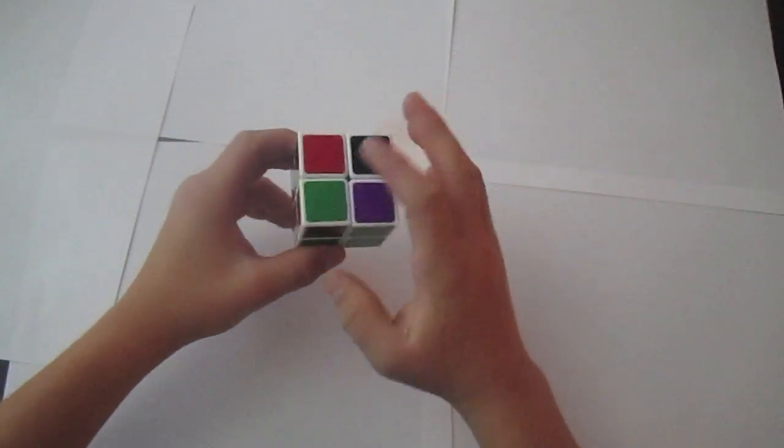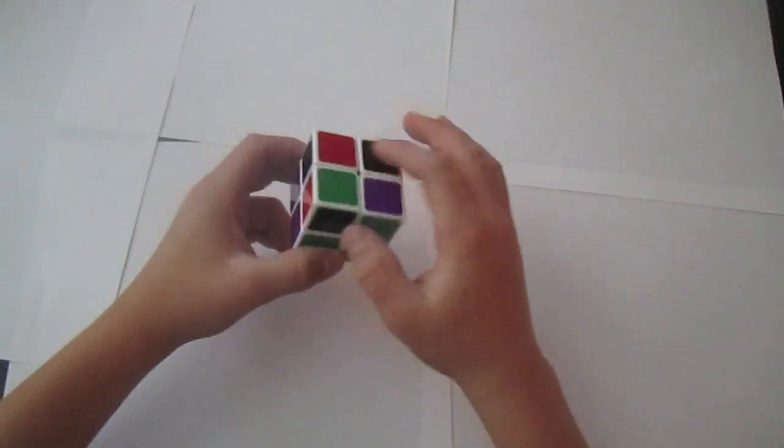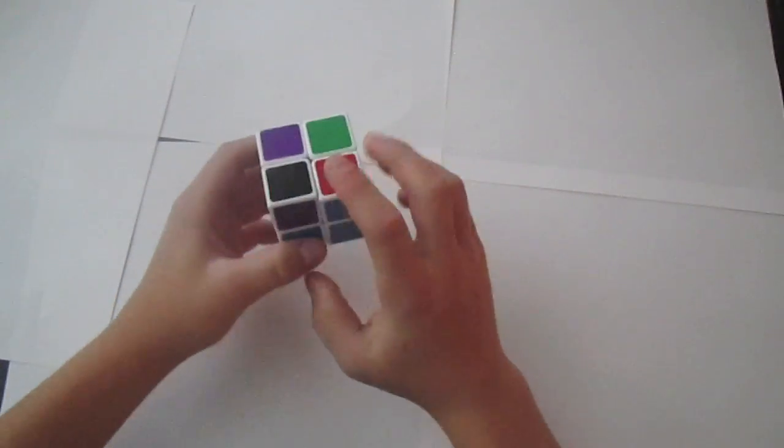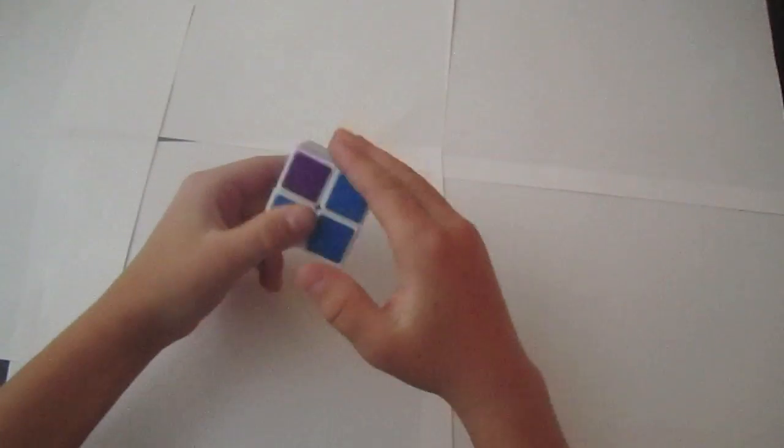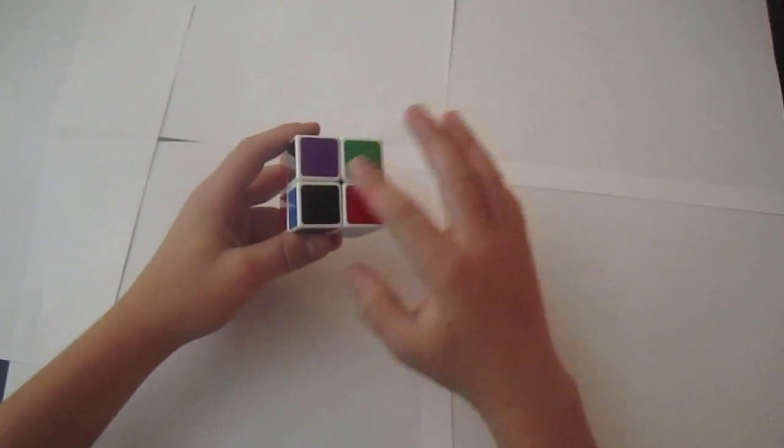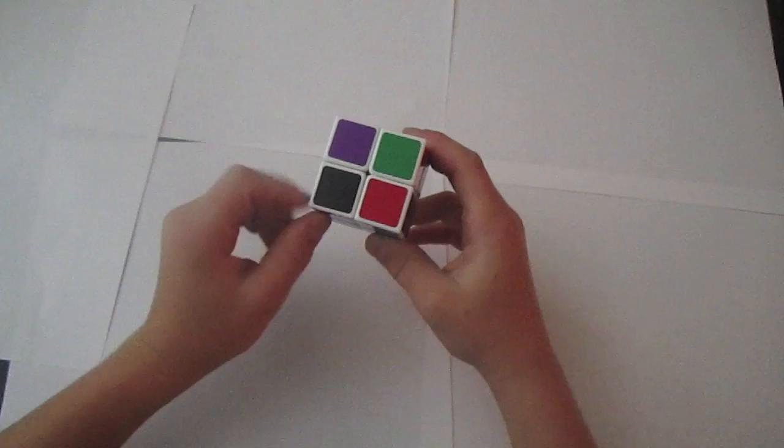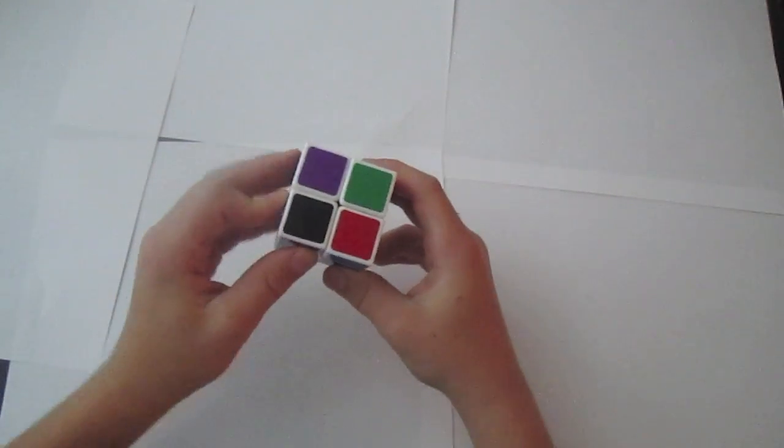The next step is to solve the top face. The algorithm you're going to use is pretty easy. You're going to see if there are any black or white pieces, depending on the cube, facing on the top side. In this case, I have one black piece, so I'm going to put it in the bottom left-hand corner.